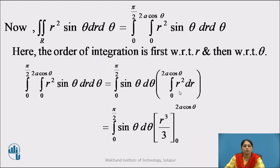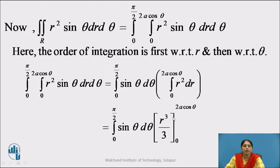The first integration is with respect to R, so terms of theta are considered constant. Sin theta can be taken outside the inner integral. We get integration from 0 to pi by 2 of sin theta d theta, multiplied by integration from 0 to 2A cos theta of R squared dR. The inner integral gives R cubed by 3, evaluated from 0 to 2A cos theta, giving us integration from 0 to pi by 2 of sin theta times (2A cos theta) cubed upon 3 d theta.